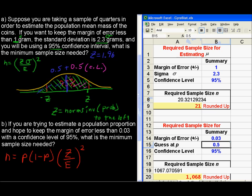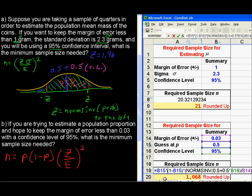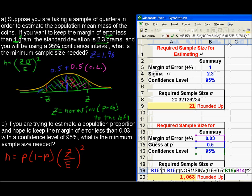This problem says, if you are trying to estimate a population proportion and hope to keep the margin of error less than 0.03 with a confidence level of 95%, what is the minimum sample size needed? It doesn't say anything about we have some previous knowledge about the proportion. Here's the formula. It's a little bit bigger because there's more involved here. But here's our P. This is the B15 times 1 minus P. And then times all of this.